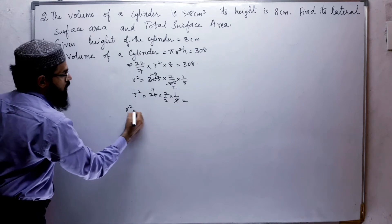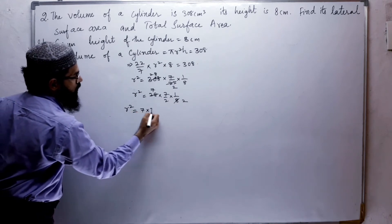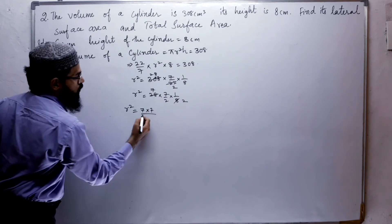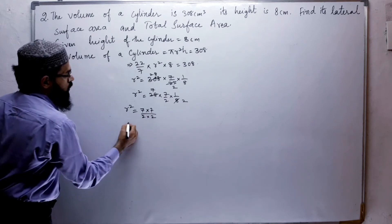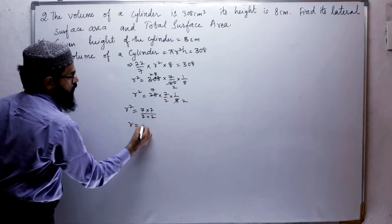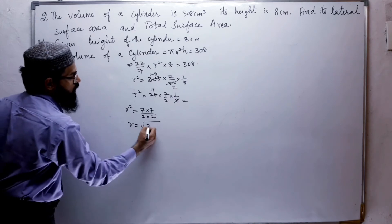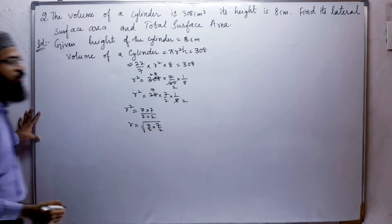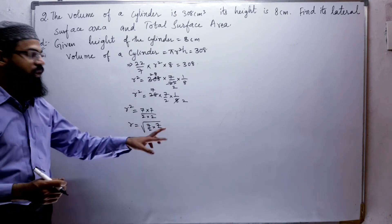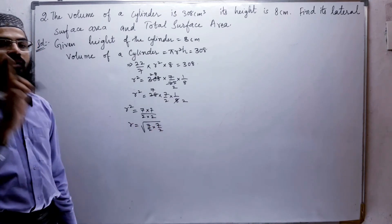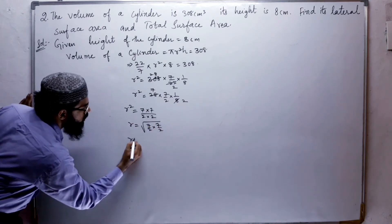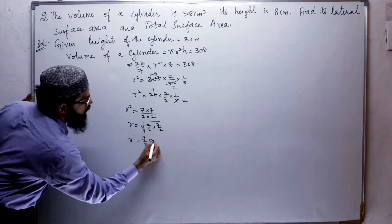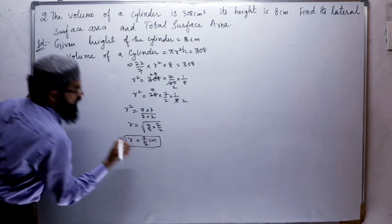r² equals 7/2 × 7/2. Taking the square root, anything appearing twice under the square root can be written once outside. So r equals 7/2 centimeters. This is the radius.